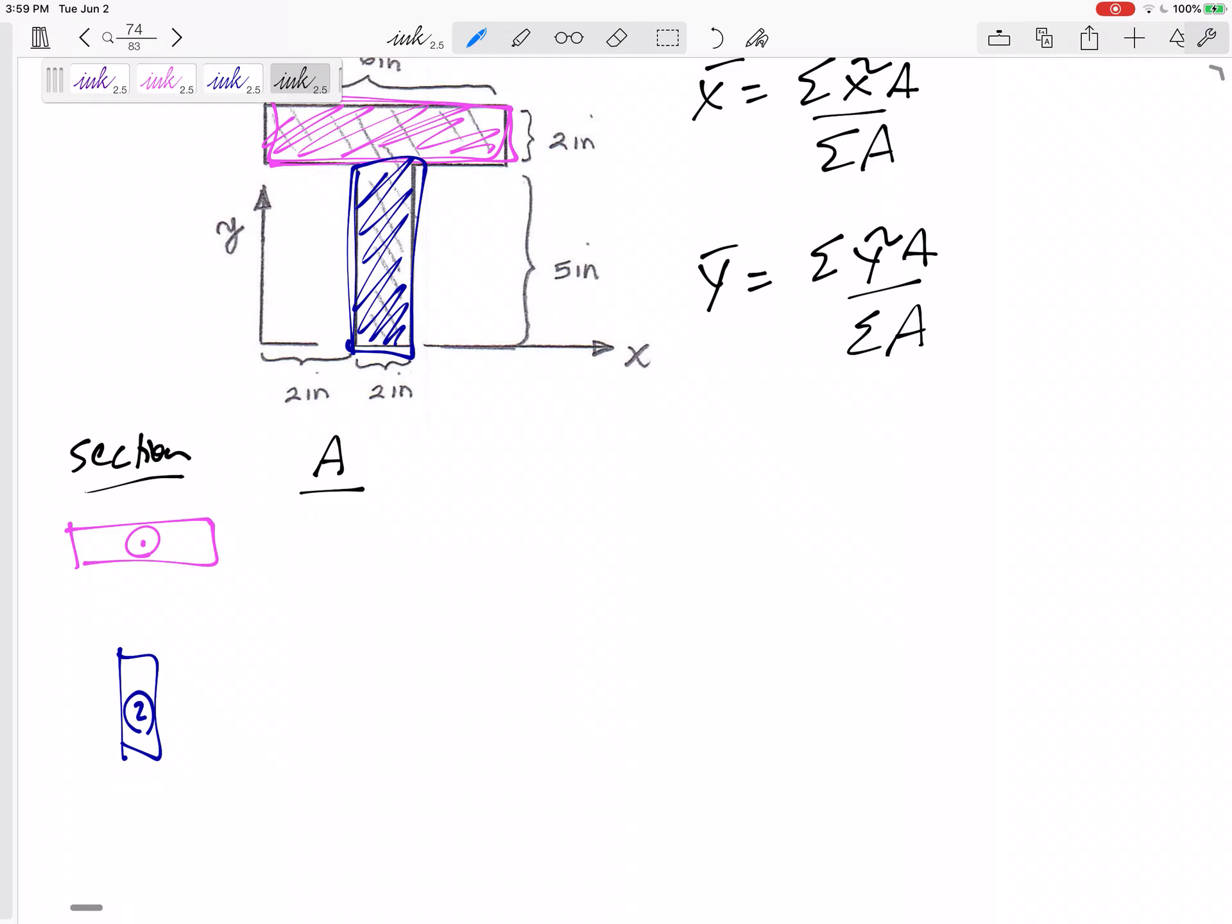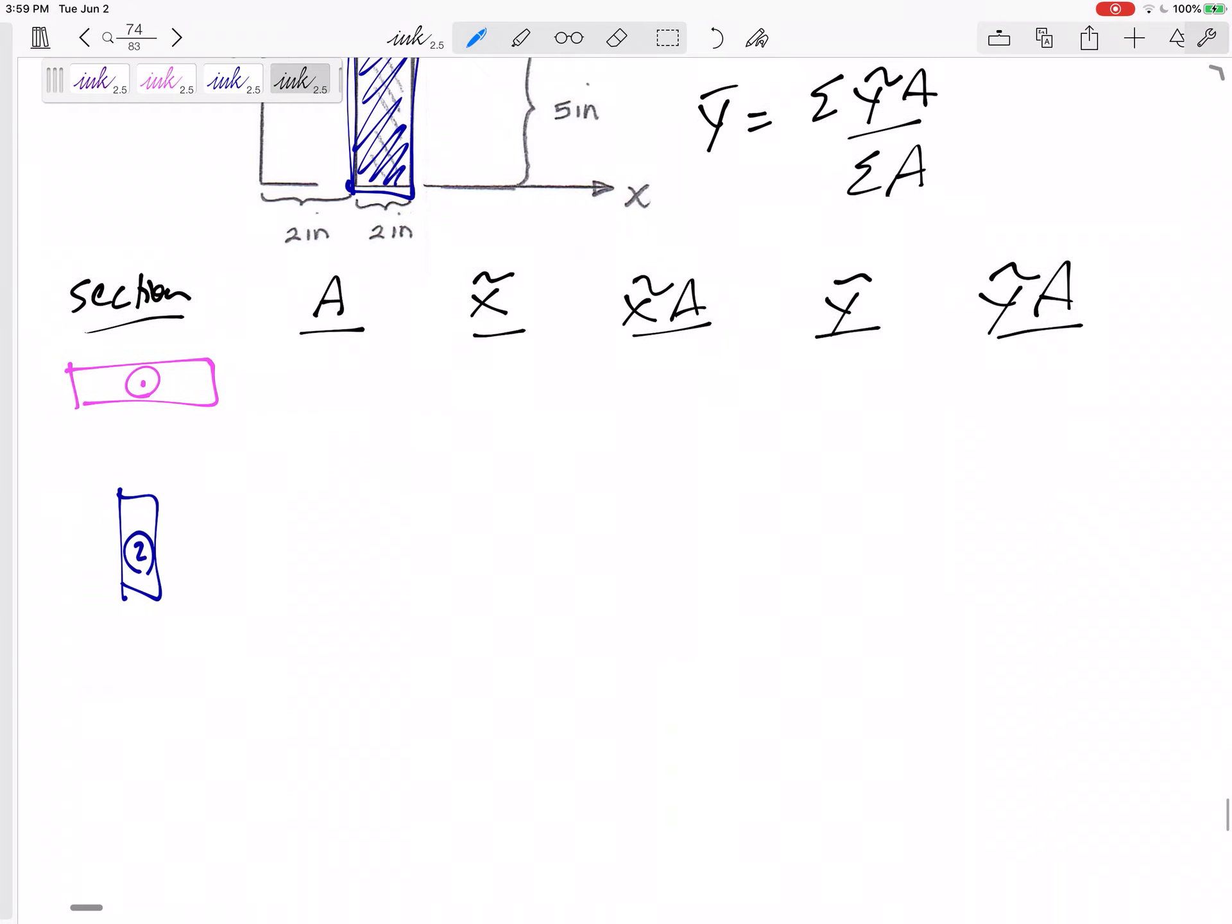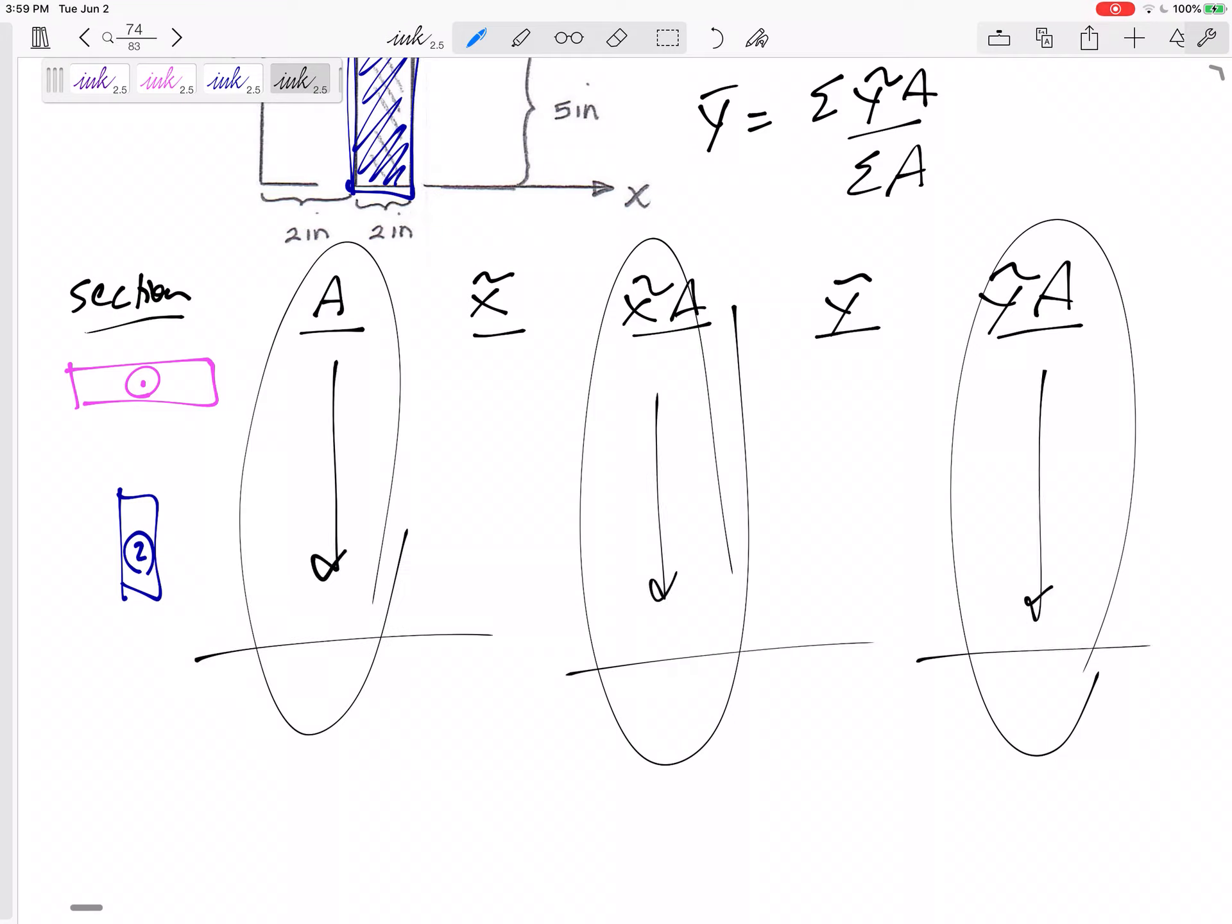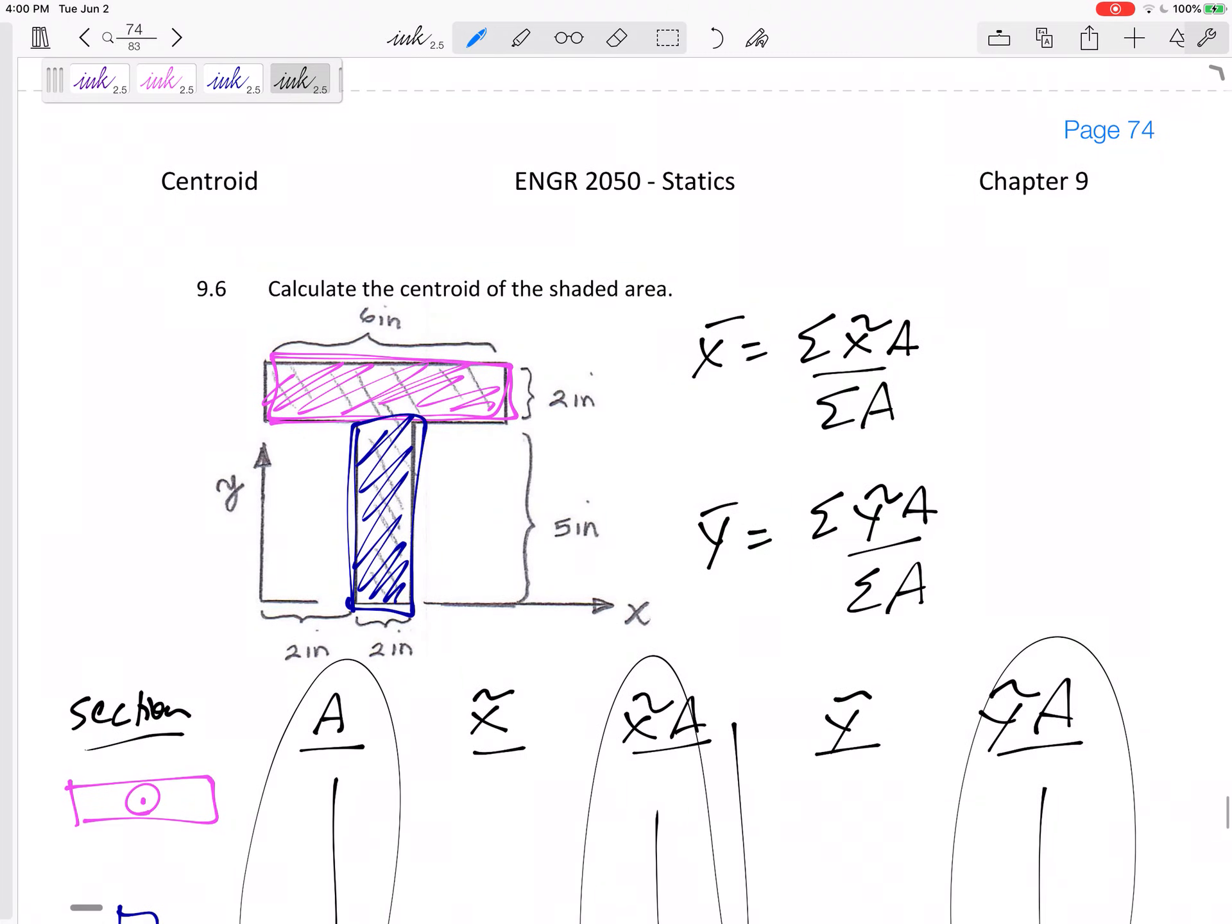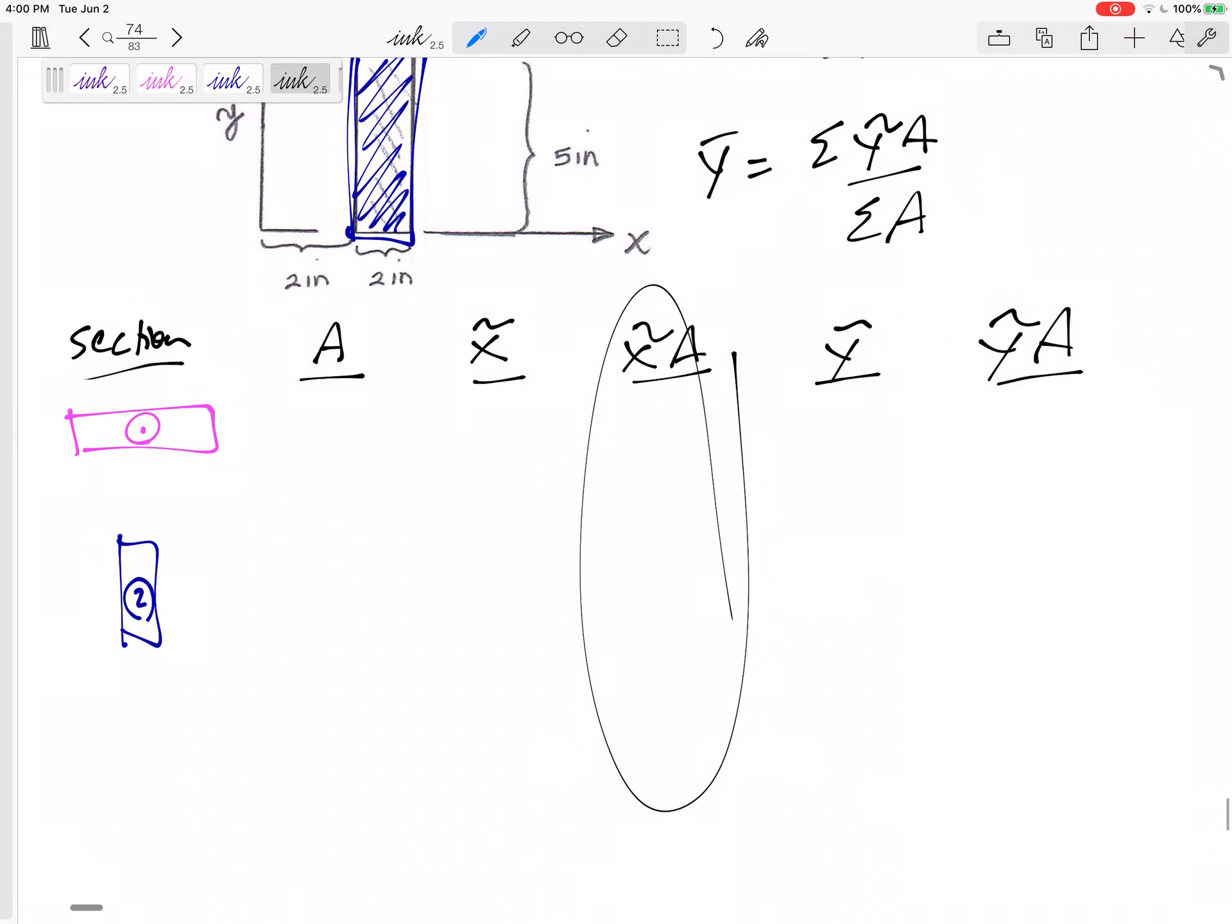And then I'm going to need to find each one's area, each one's x tilde. And then I'm going to multiply the x tilde a together, find the y tilde, multiply the y tilde a together. And it's these three columns that I'm going to sum. And then I'll come and take that divided by that, that divided by that. So you can really organize your problem nicely this way.